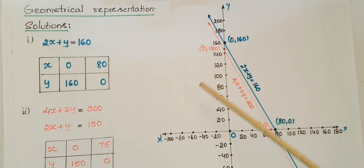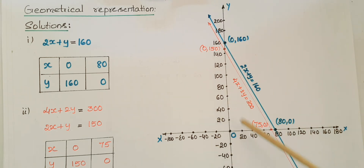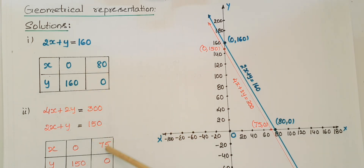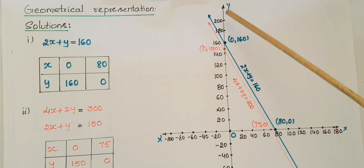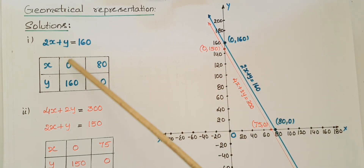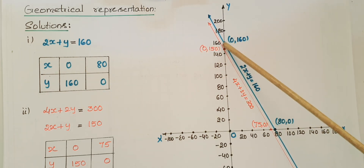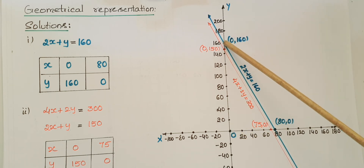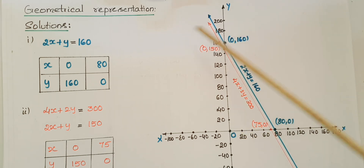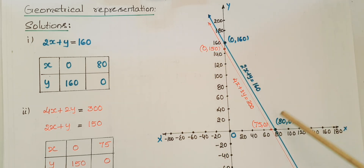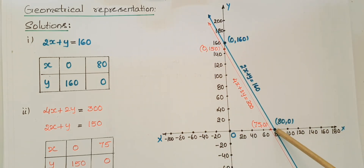Now mark these points on the graph. First draw the x-axis and y-axis, and mark each unit as 20 units, because the points are 80, 160, 75, and 150. The first coordinate is (0, 160): x-coordinate is 0 and y-coordinate is 160, so mark this point. The next coordinate is (80, 0): x-coordinate is 80 and y-coordinate is 0, so mark this point.